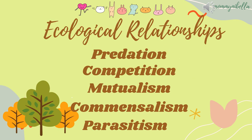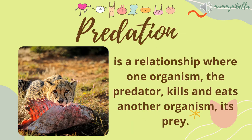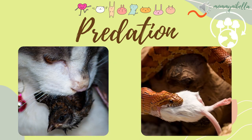Ecological relationships describe the interactions between and among organisms within their environment. The five ecological relationships in an ecosystem are predation, competition, mutualism, commensalism, and parasitism. Predation is a relationship where one organism, the predator, kills and eats another organism, its prey.